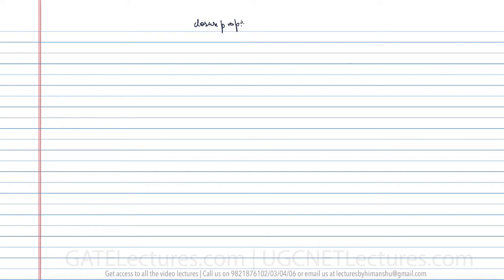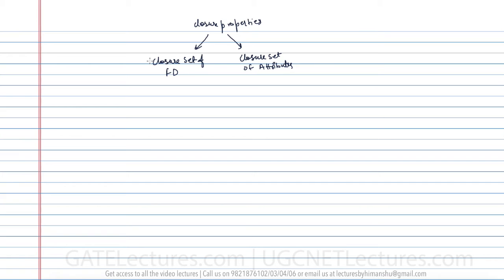After discussing closure properties, we can discuss two things: the closure set of functional dependencies and the closure set of attributes. These two are different. When we discuss the closure set of functional dependencies, we are trying to determine what additional functional dependencies can arise from a given set. When studying the closure set of attributes, we are given some set of attributes that can be determined using a given set of functional dependencies.